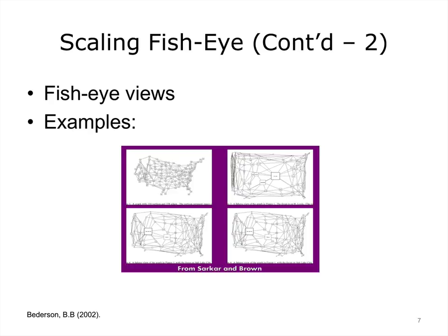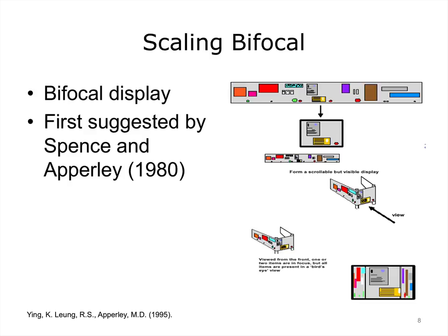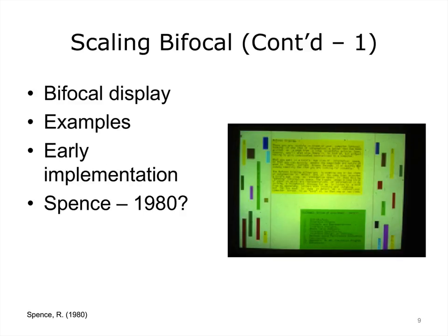Here is an example of using the fisheye view concept for graphs. Bifocal display uses a similar concept, but instead of a radial distortion of everything outside of the focal view, it folds the visualization into three parts. The main focal part is shown in great detail, while the other two peripheral parts are shown in perspective. Here is a particular implementation of a bifocal display.